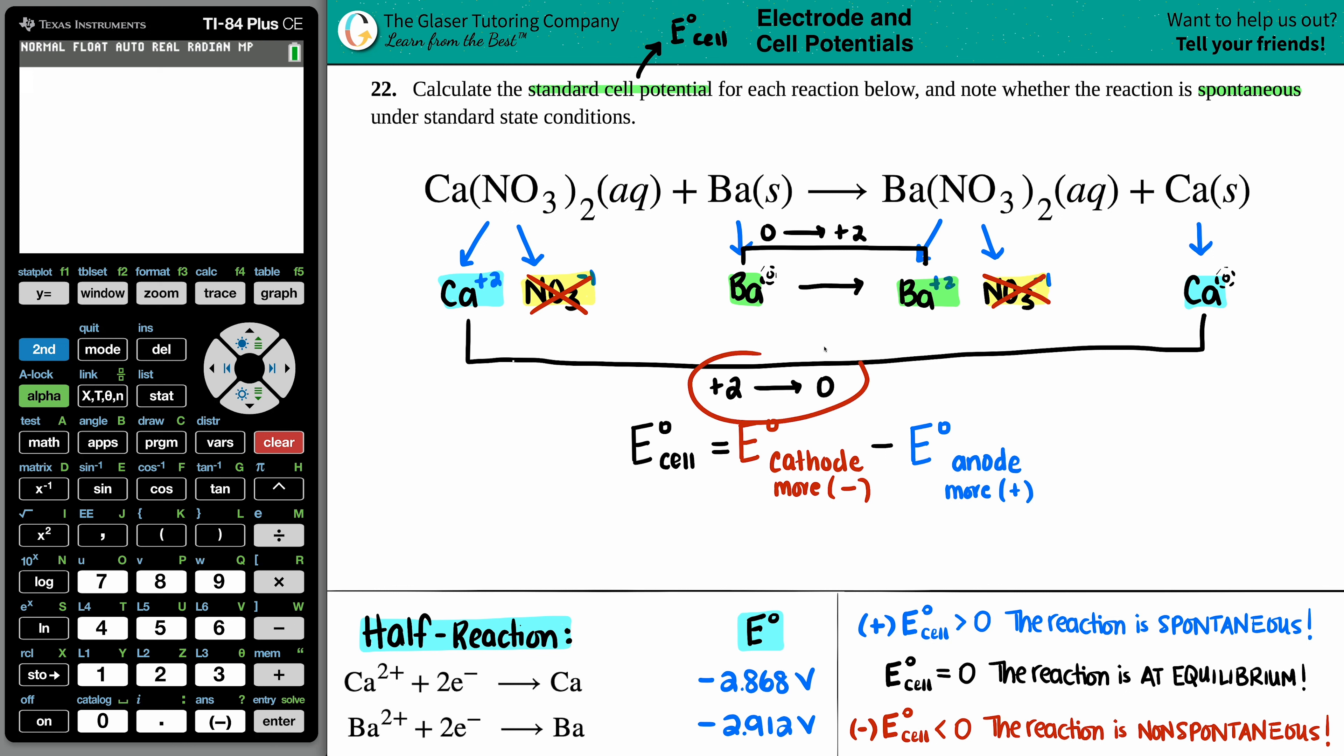Well, look at this. Look at calcium. Calcium went from a plus two to a zero. Is that becoming more negative or more positive? Yeah, that's becoming more negative. So that has to be the cathode. So Ca is going with the cathode. The anode has to be the barium, but let's just double check. It went from a zero to a plus two. Is that more positive? Yes, it is. More positive. And that has to be the anode. So the barium is going here.